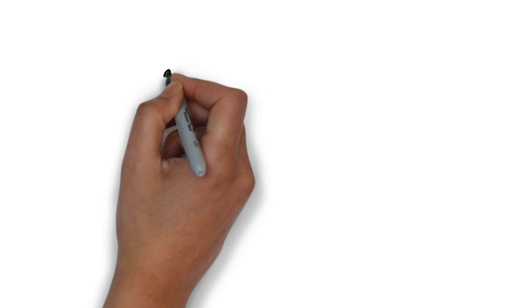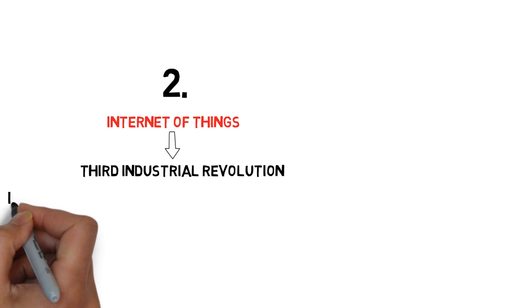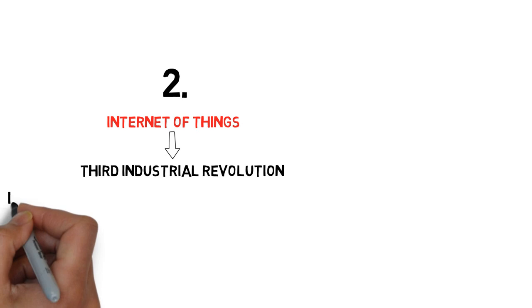The second way capitalism is being threatened is the rising internet of things and infrastructure for the third industrial revolution. So back to basics.